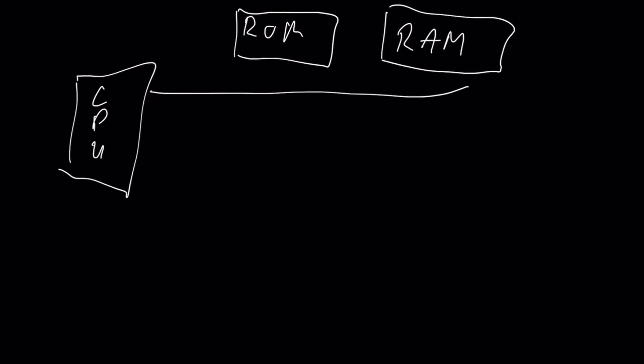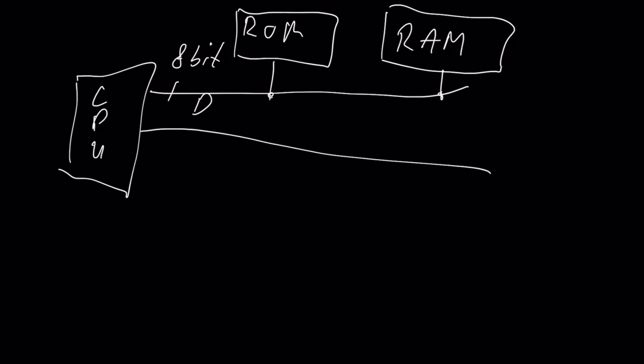There is a data bus, which is 8-bit wide most of the time for 8-bit computers, and the address bus. The data bus covers bits 0 to 7, and the address bus is 16-bit wide — A0 to A15. There is also a circuit which helps the CPU select the proper memory — ROM, RAM, or any connected equipment. This is called glue logic. I won't draw it right now, but it will be important later and I will talk about it.